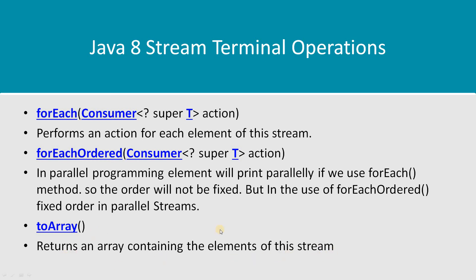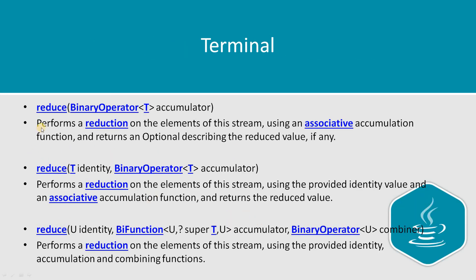Next is reduce, which is a very handy function. You pass a binary operator — reduce applies the logic to all elements of the input stream and gives you a final result. There are three variants: the first takes simply a binary operator, for example to sum all elements of an integer stream. The second variant takes an identity (initial value) plus a binary operator — if the stream is empty, the identity is returned as the result.